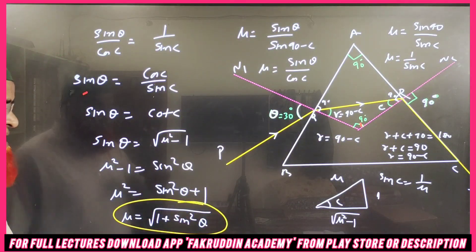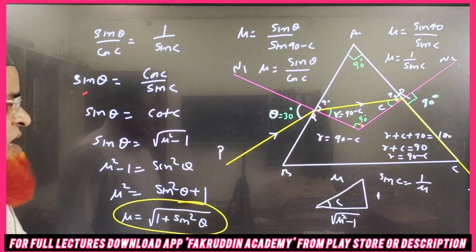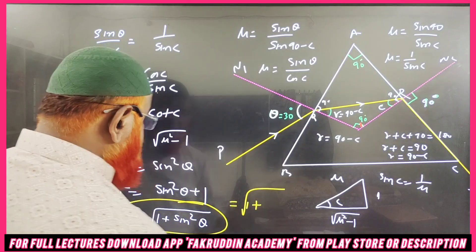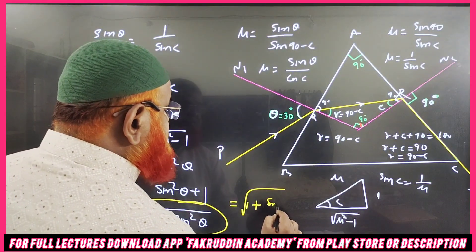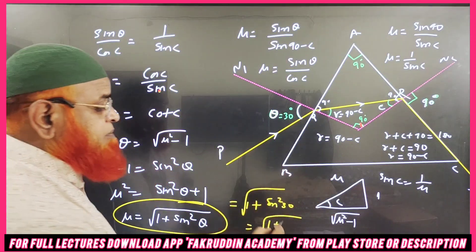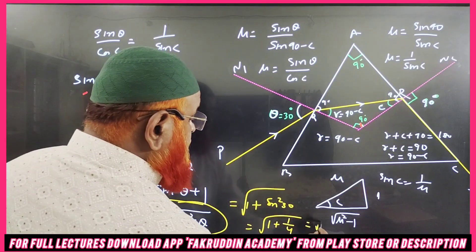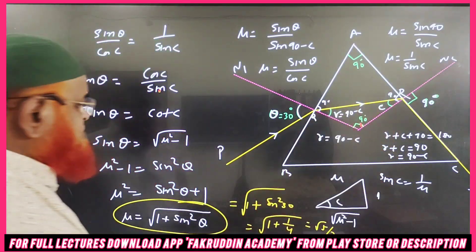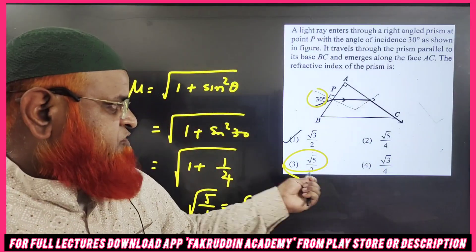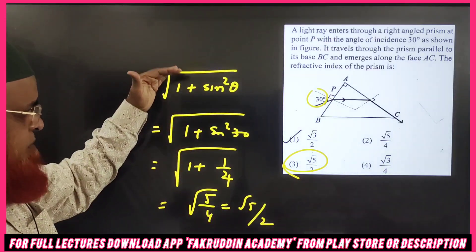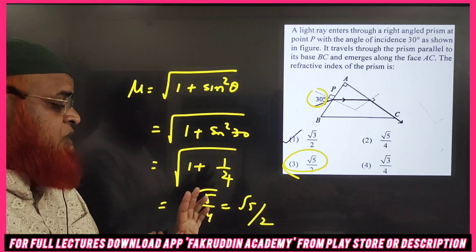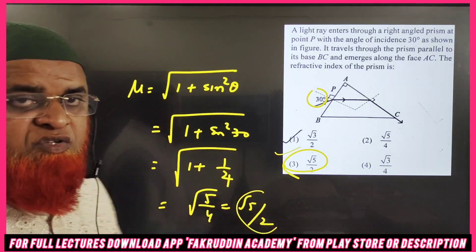The shortcut formula is ready: μ = √(1 + sin²θ). Substituting θ = 30°: sin 30° = 1/2, so sin²30° = 1/4. Therefore μ = √(1 + 1/4) = √(5/4) = √5 / 2. So the answer is √5 / 2. Thank you very much, have a nice day!